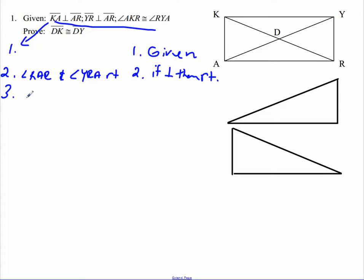Since they're right angles, they're going to be congruent to each other. So angle KAR is congruent to angle YRA. And I have this right here.